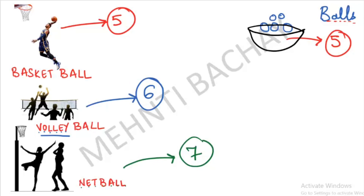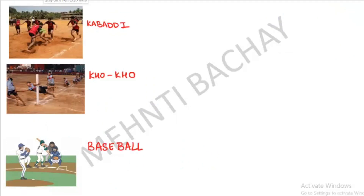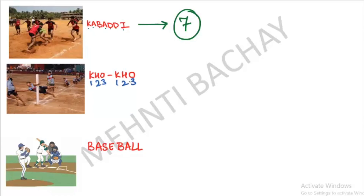Next is Kho Kho. How do you remember? There are 3 letters in 'Kho' and there are 3 letters again. If we multiply 3 by 3, we get 9. So there are 9 players in Kho Kho.